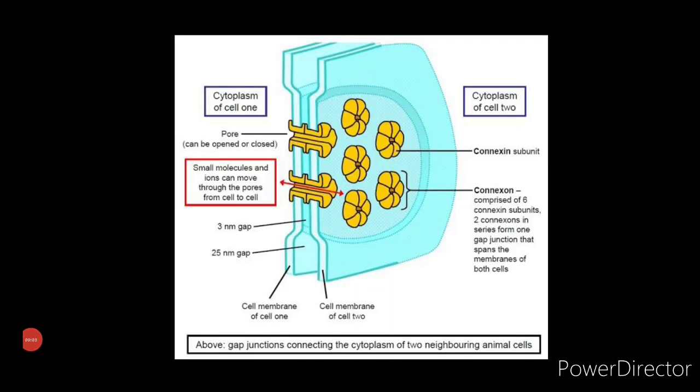Communicating junctions called gap junctions are composed of structures called connexons, a complex of six identical transmembrane proteins called connexin.